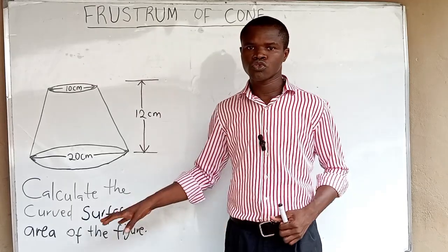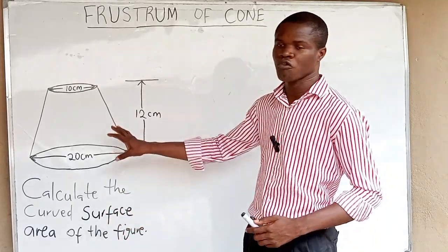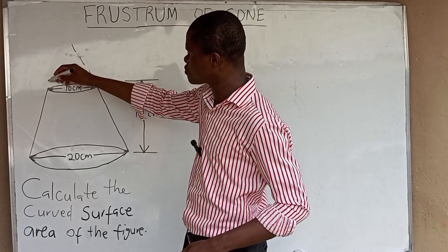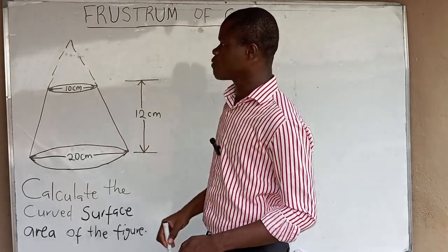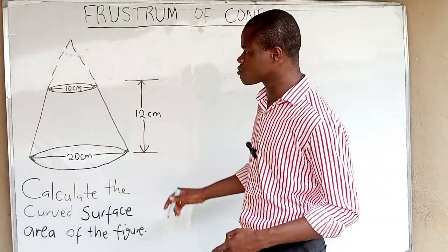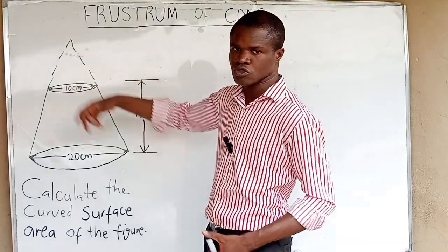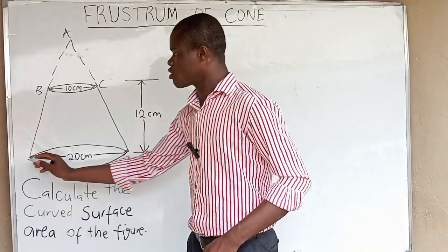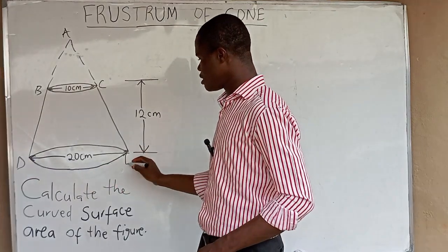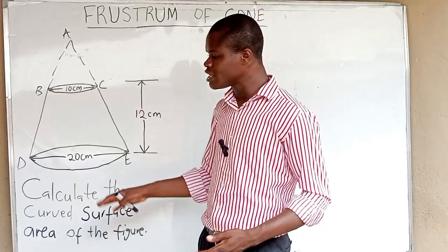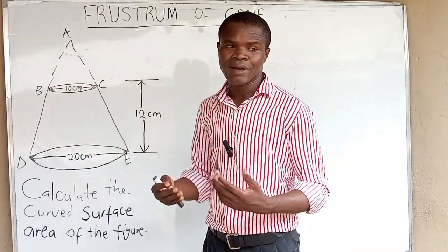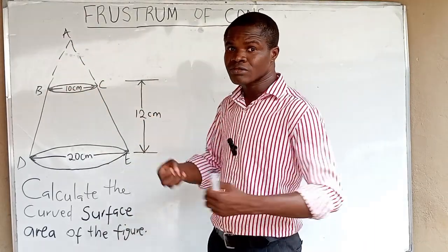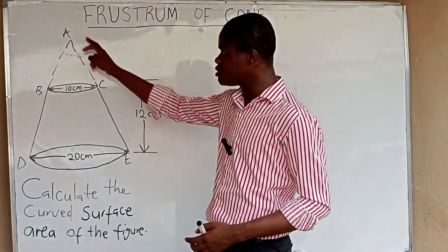In this video, I want to show you how to calculate the curved surface area of a frustum. If you complete this figure, then what you have gotten is a cone. So now that we have completed our frustum, I can call here A, B, C, D, and E. We get the curved surface area of this frustum by getting the curved surface area of the smaller cone and subtracting it from the curved surface area of the bigger cone.